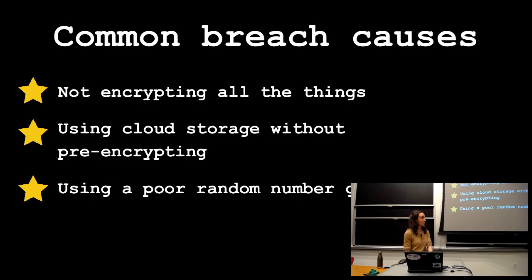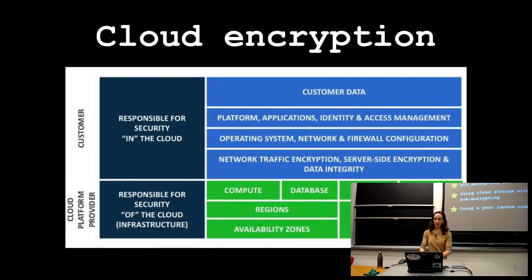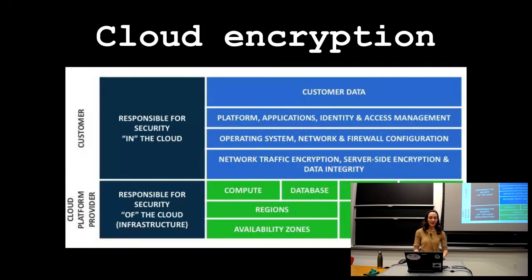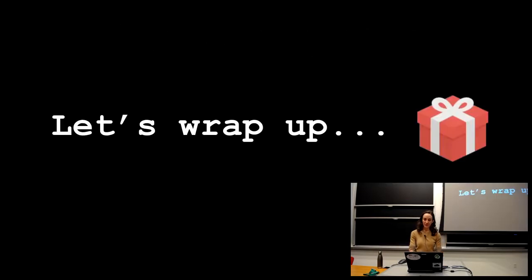So the common causes of breaches are often not encrypting everything that you should, using cloud storage without pre-encrypting, or using a poor random number generator. So this is a model of shared responsibility that's often used by cloud providers. And I want to point out here that in the bubble that says responsible for security in the cloud, there are a lot of important things like, so these are what the customer is responsible for, customer data and the encryption of that, identity and access management, server-side encryption, and so on and so forth. So in general, if you're using a cloud provider, unless you're using a free open source cloud provider, you're not exactly sure how they're going about encrypting your data. But in this case, they're also explicitly telling you that they're not doing it. So that's an example of something that you're definitely responsible for if you're using a cloud provider. Cool.